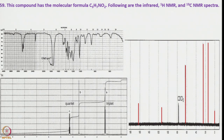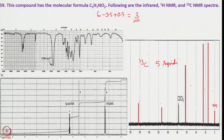Another example: this compound has molecular formula C5H7NO2. The IR, 1H NMR, and 13C NMR spectra are given. Calculating the hydrogen deficiency index: (6−7)/2 + 0.5 = 3. So HDI = 3. There are 5 13C signals — all unique — and a quartet and triplet in the 1H NMR suggesting an ethyl group. There is also one signal in the CH2/CH3 region that is isolated (not coupled), and a carbonyl group indicating possibly an ester.